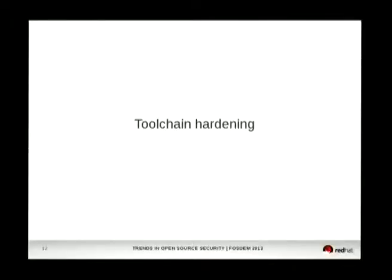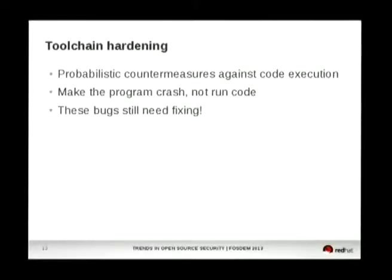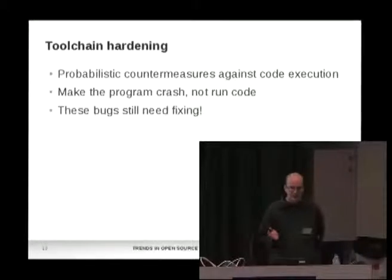The next part is toolchain hardening — basically about changing GCC, binutils, the kernel, and everything that lies below most programs running on GNU/Linux, and changing them to reduce the impact of security vulnerabilities. Most of these countermeasures are probabilistic countermeasures against code execution, meaning there's always a non-zero probability that an attacker gets through because randomness is involved and a correct guess still results in code execution.